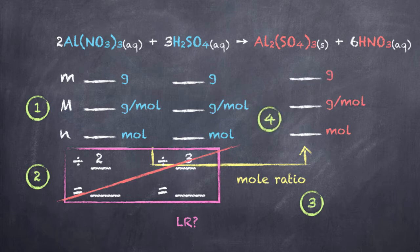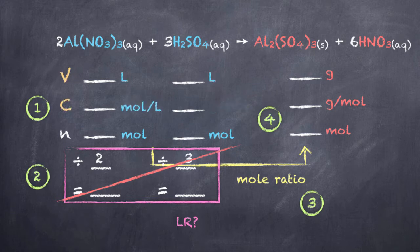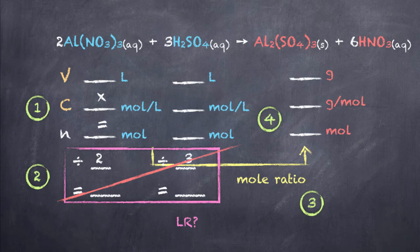In a solution stoichiometry problem, rather than using mass divided by molar mass to get the number of moles, we are given volume and concentration. Notice that it's volume times concentration — not divided — because n equals c times v. So we're multiplying volume times concentration to get the number of moles, and then once we've done that the process is identical to previous processes.